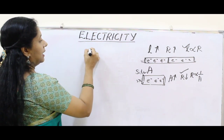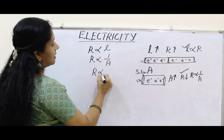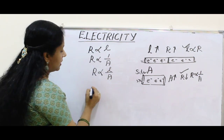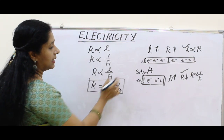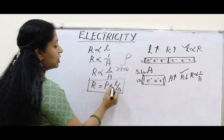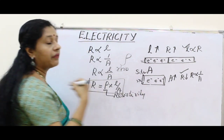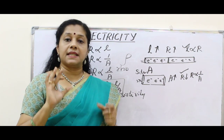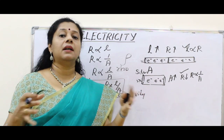If we combine the two equations — R is proportional to L, and R is inversely proportional to A — we get R is proportional to L by A. Removing the proportionality sign by adding a constant, we get R = ρL/A, where ρ (Rho) is the Greek letter called resistivity. Rho represents the nature of the material. It will not change with length or area, but it varies from metal to metal.